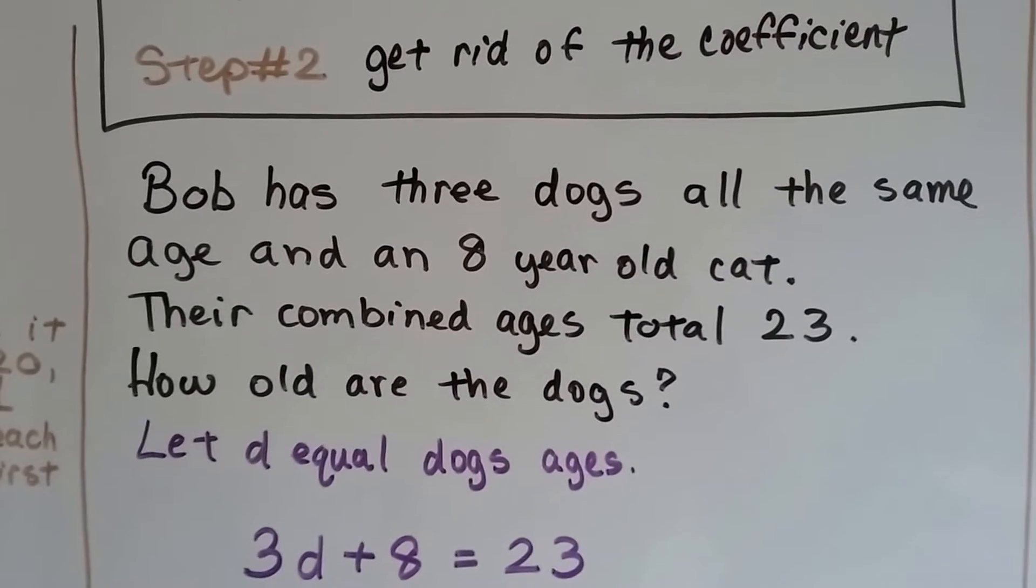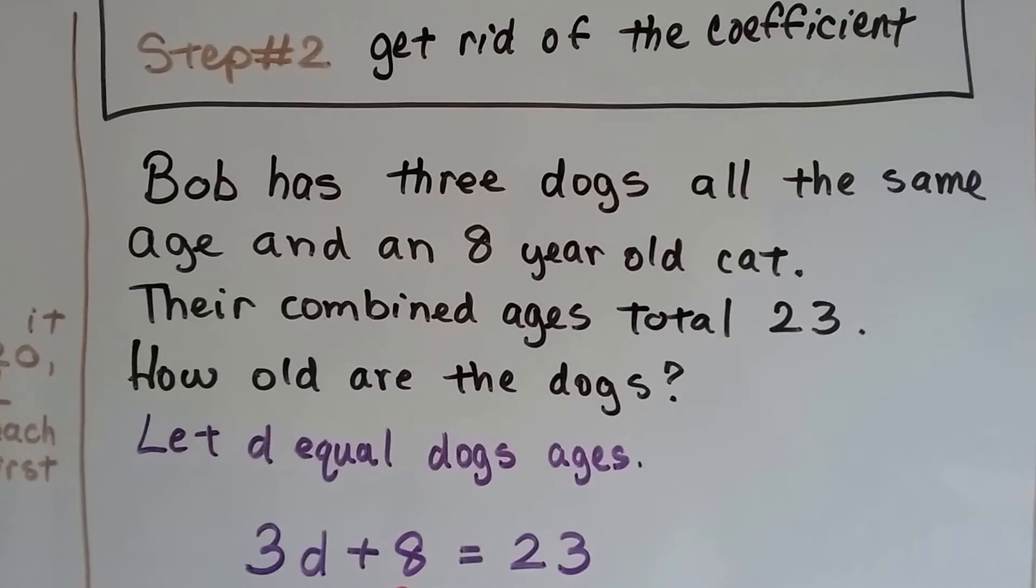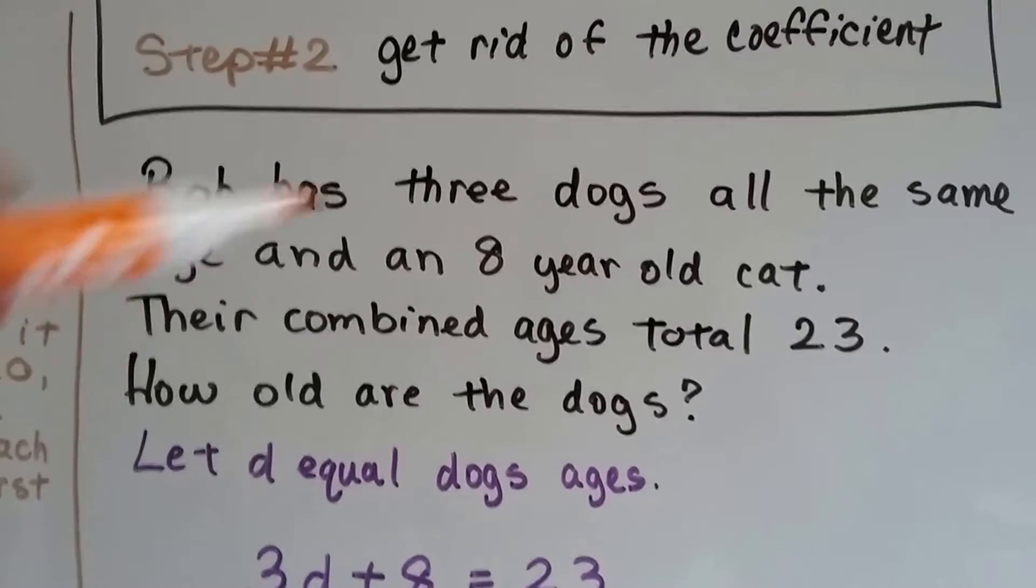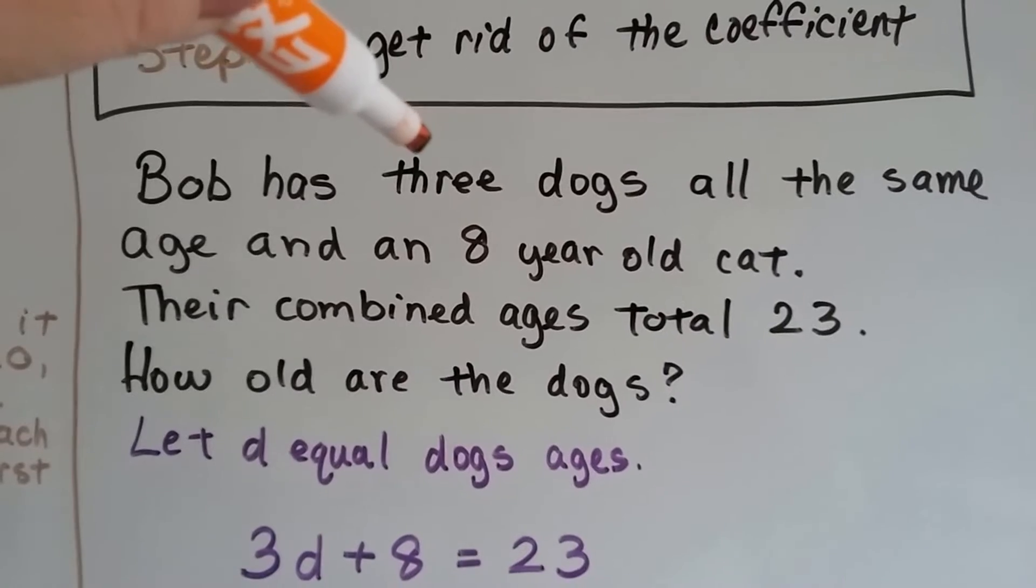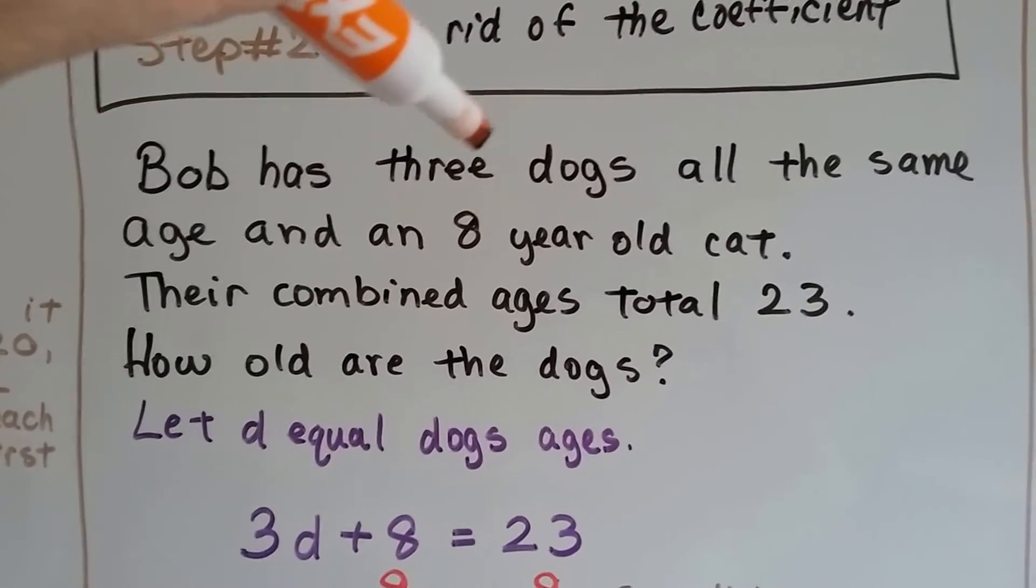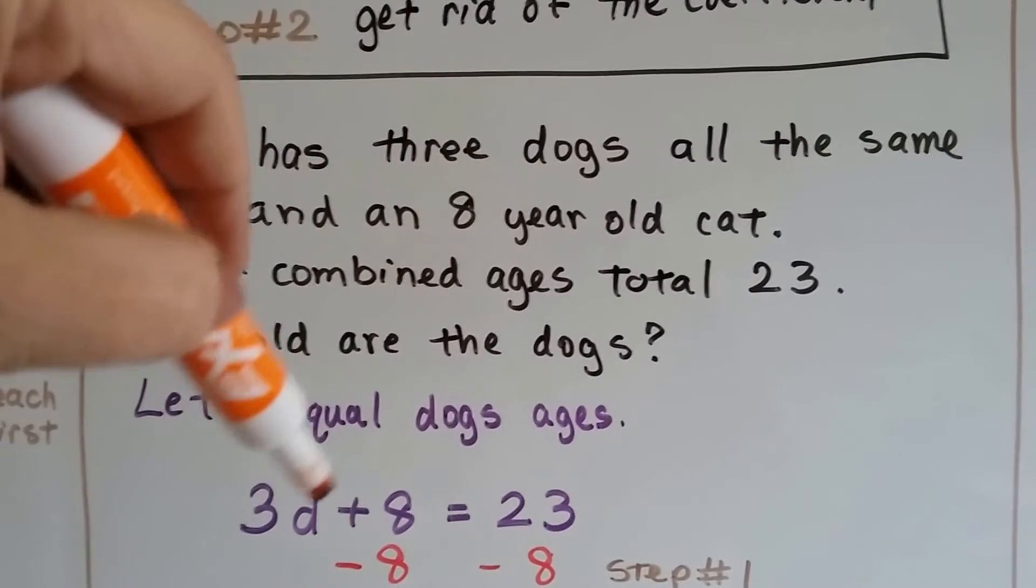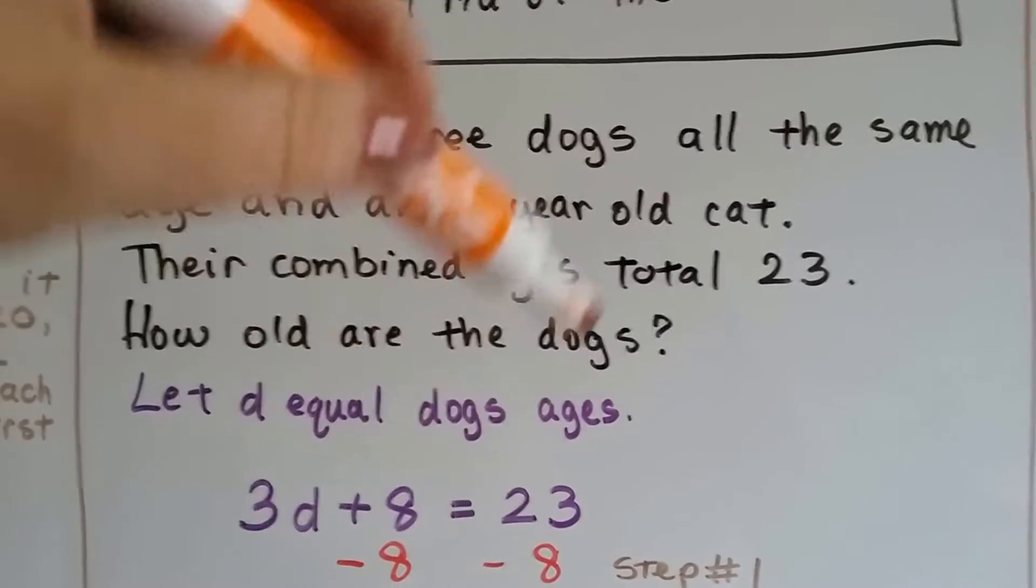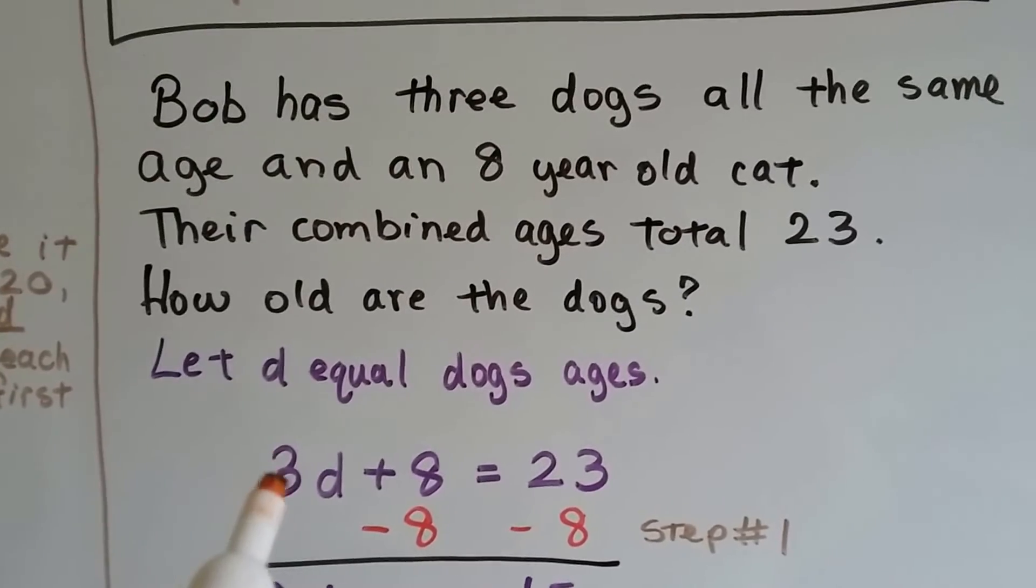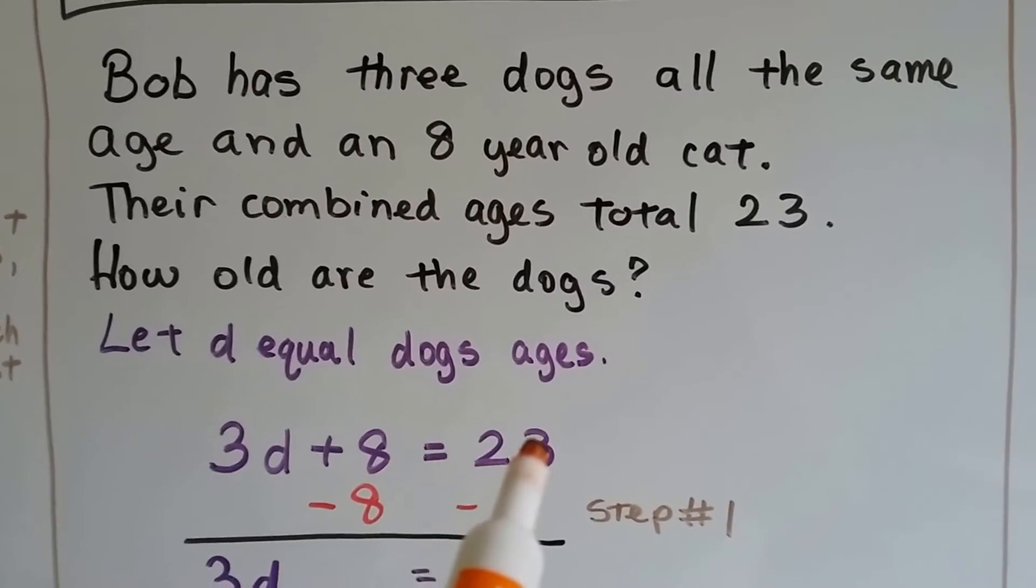So Bob has 3 dogs and they're all the same age and he has an 8-year-old cat. The combined ages total 23. How old are the dogs? Well, it says he has 3 dogs that are all the same age, so that's 3 times the dogs. And then there's an 8-year-old cat, so that's 3 times the dogs plus the 8. And their total is 23. So our equation ends up becoming 3d plus 8 equals 23.